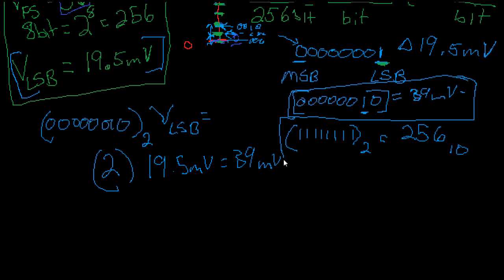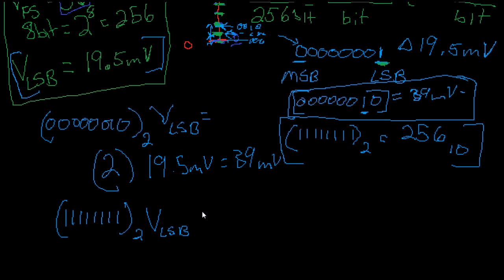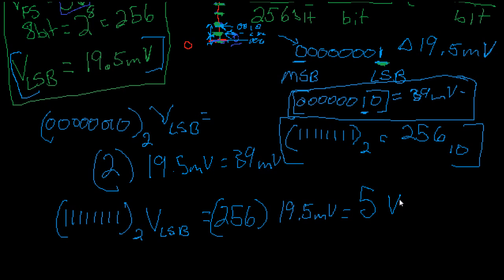So now let's say we want to convert this number — our digital word 11111111. What we're going to do is take that digital word, just like we did here, and this is base 2. We multiply it again by our VLSB. In this case, as we said, it's 256. So 256 times 19.5 millivolts. Surprise, surprise — we're going to round up. It's 5 volts. Grab a calculator and check it if you want. It's going to be like 4.99-something volts, and that's close enough.